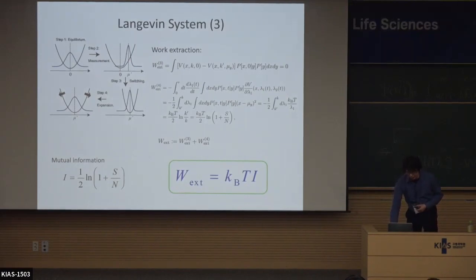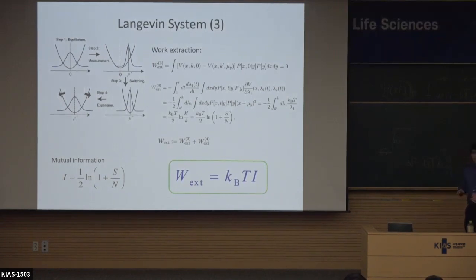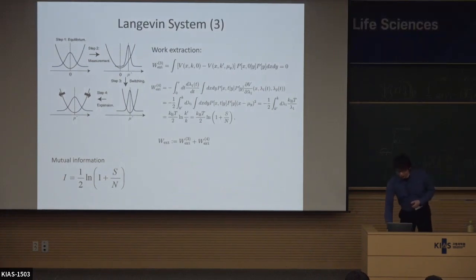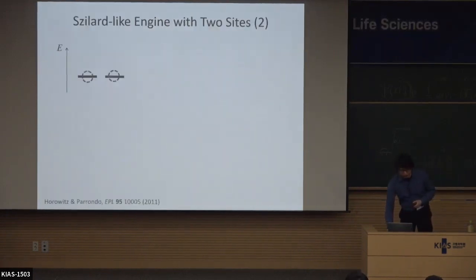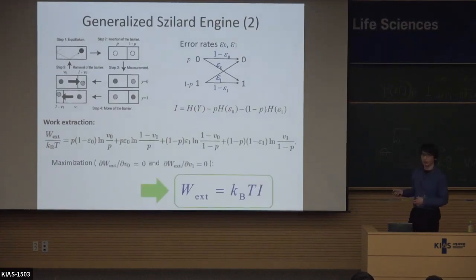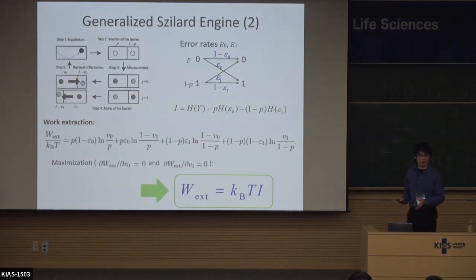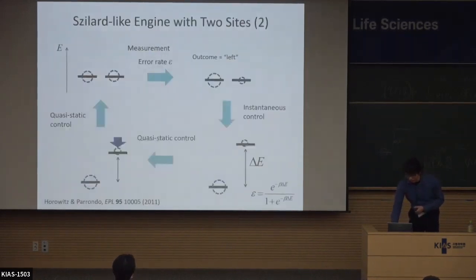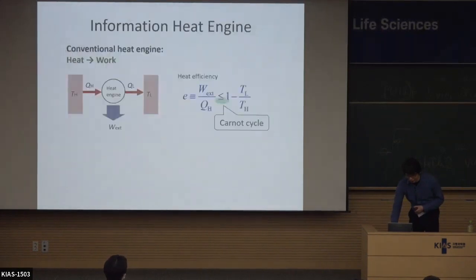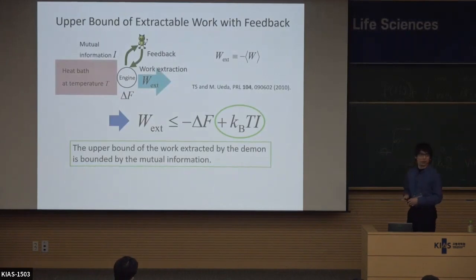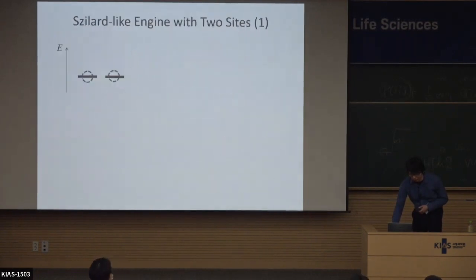Now you can see that everything is the same strategy. The first example was actually also the same: the best position of the wall is given by the same strategy where the conditional distribution satisfies the Gibbs condition. So far we have talked about this inequality — the upper bound of work extraction in the presence of Maxwell's demon. Now I'm going to talk about more non-equilibrium aspects of information heat engines.